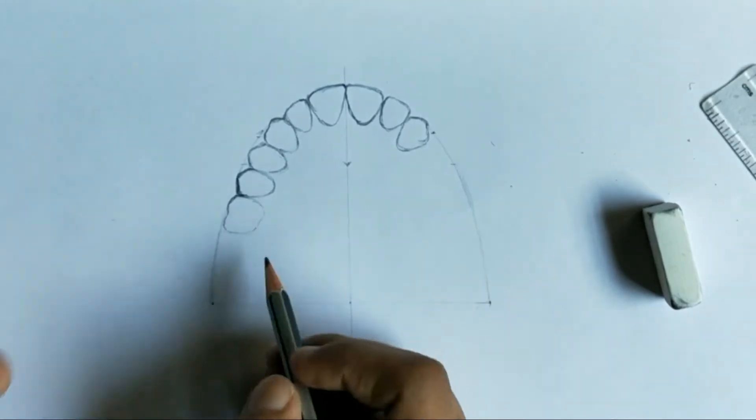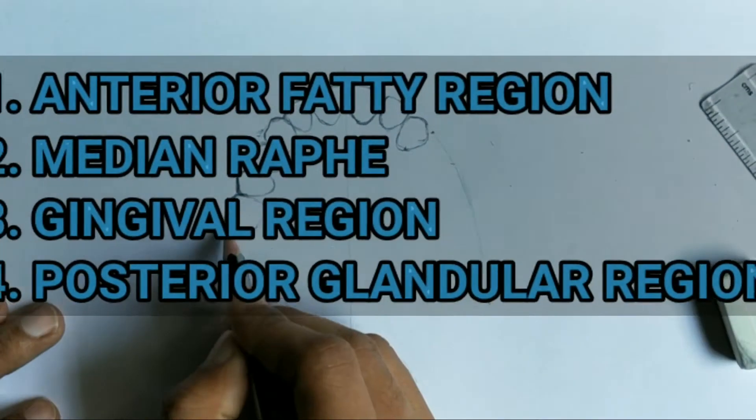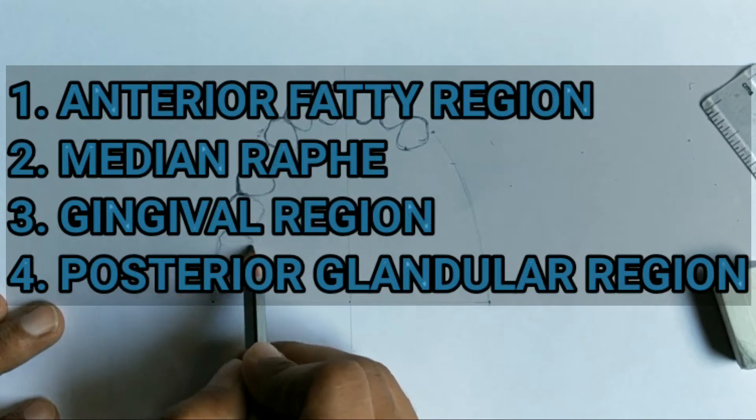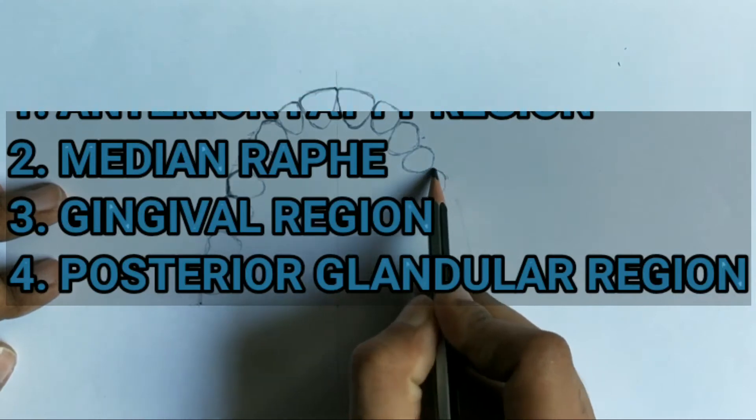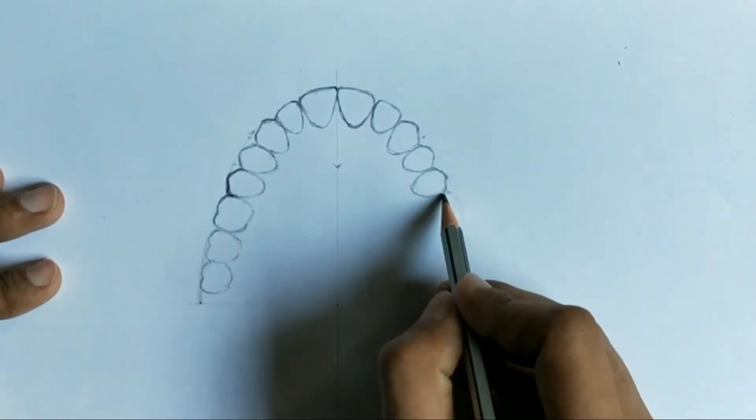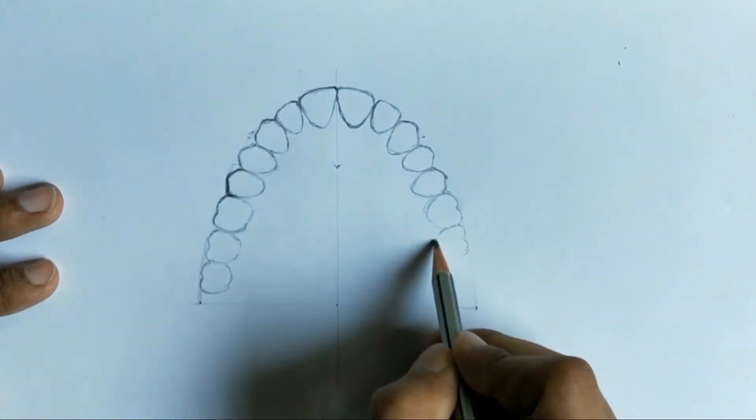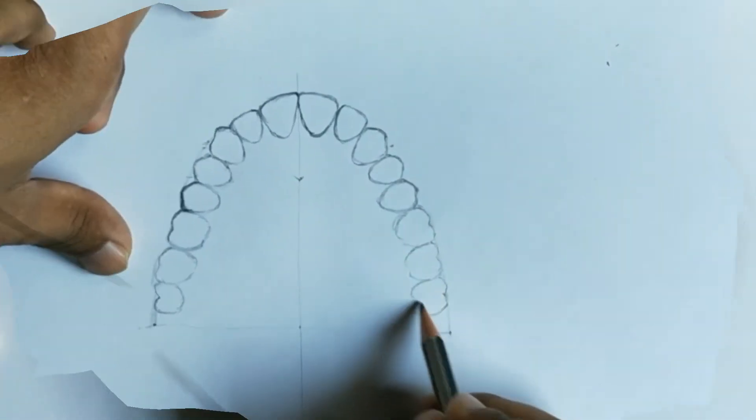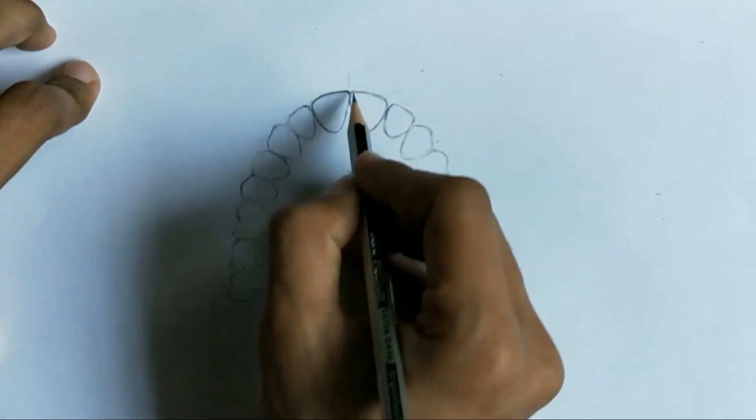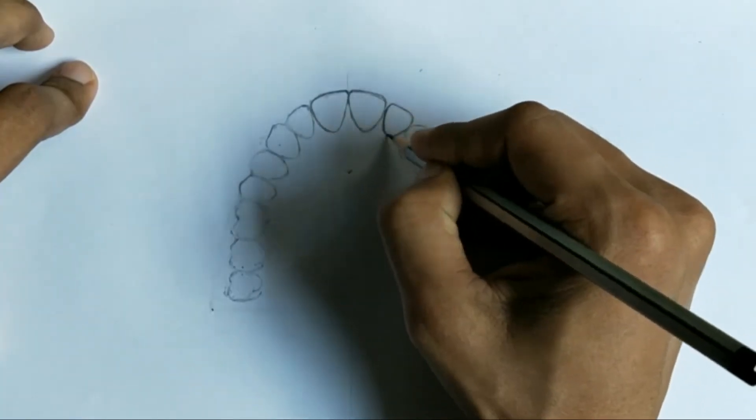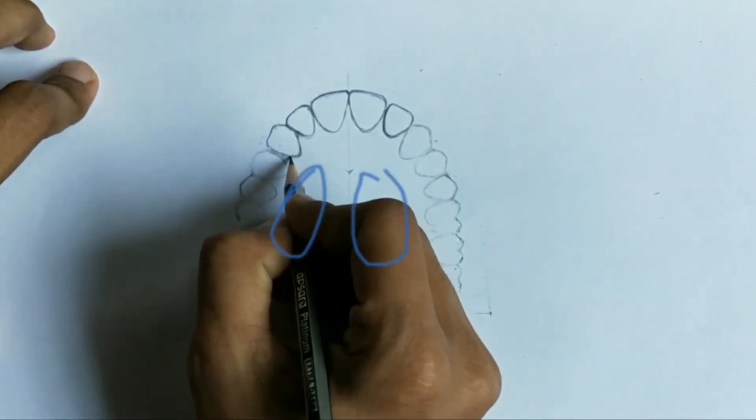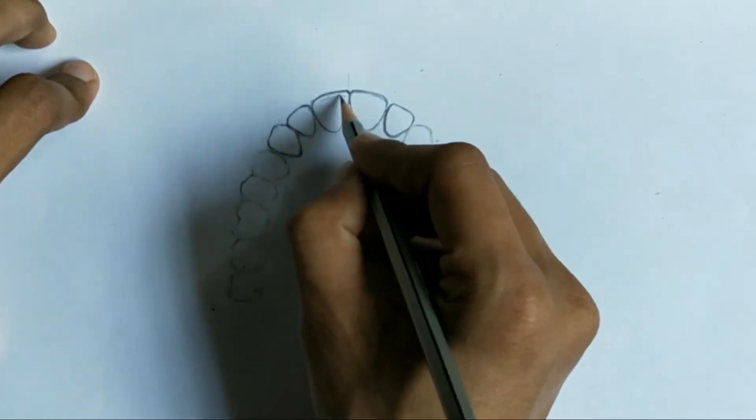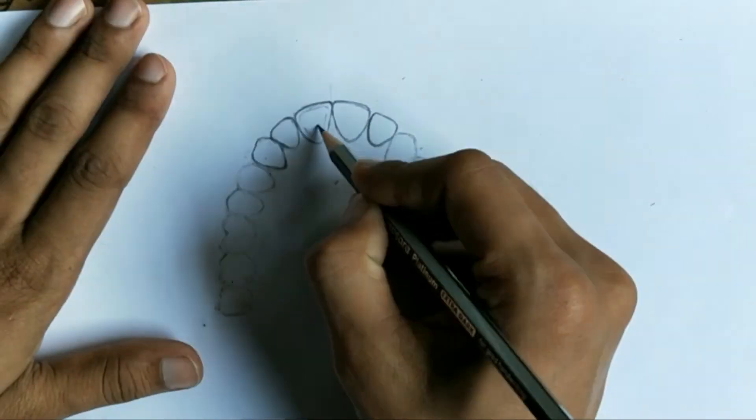The hard palate is subdivided into four regions: anterior fatty region, median raphe, gingival region, and posterior glandular region. First we'll discuss the anterior fatty region, between the raphe and gingival region of the anterior portion. In this area connective tissue bundles contain fat.